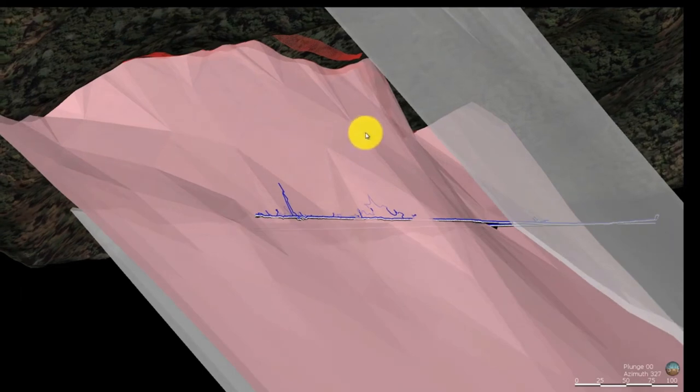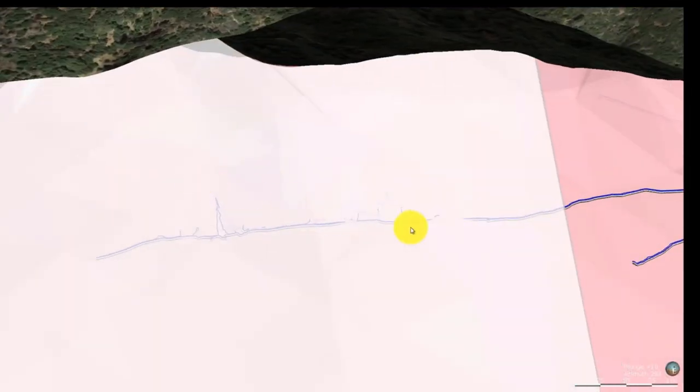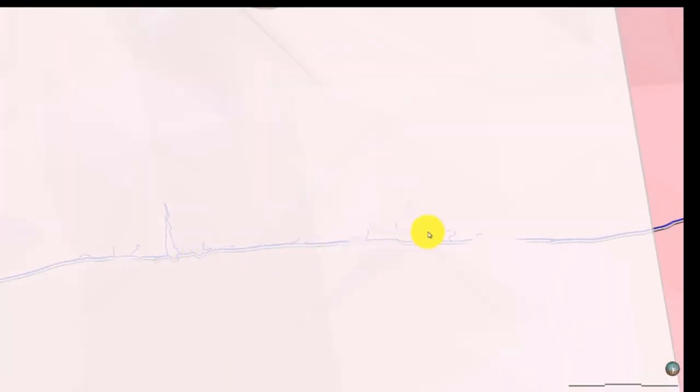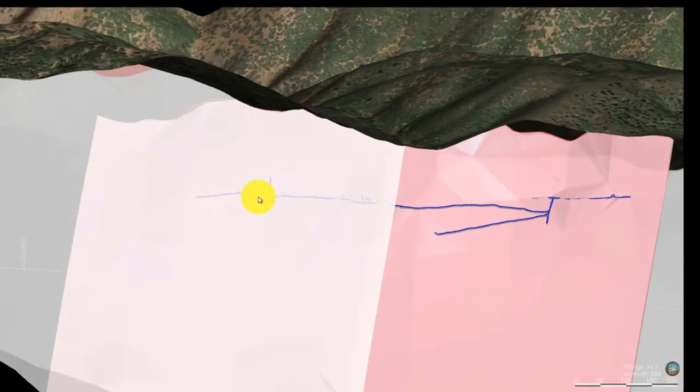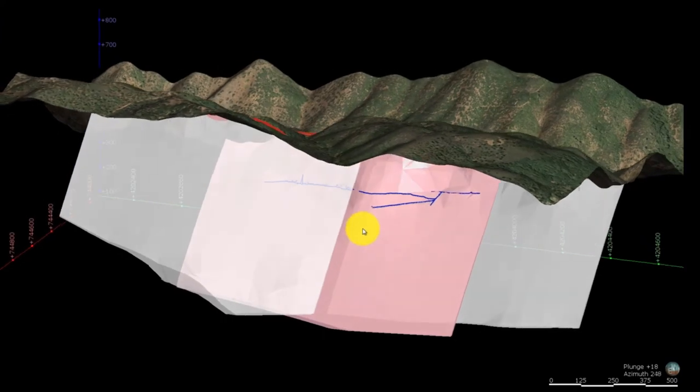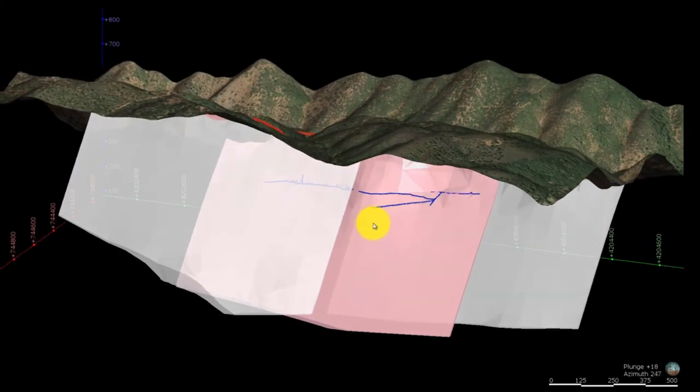Along strike, there are large stopes to the north. We don't have production numbers for them, but they are recorded as having significant gold. At depth, down to the 1,200 level, one of the old reports describes a 15-foot wide zone averaging 0.75 ounces per tonne. We don't have actual historic production records. We just have hearsay from the previous operators on that one.